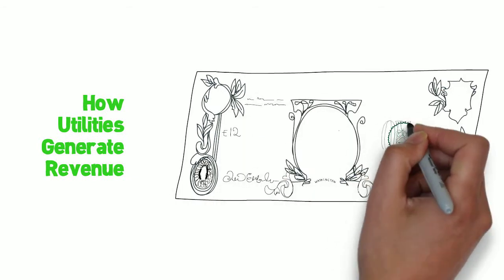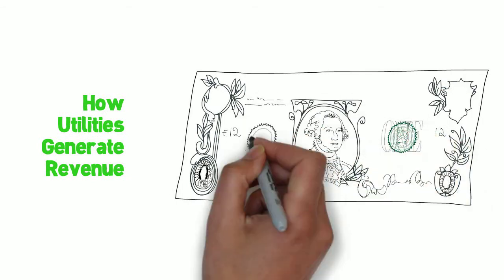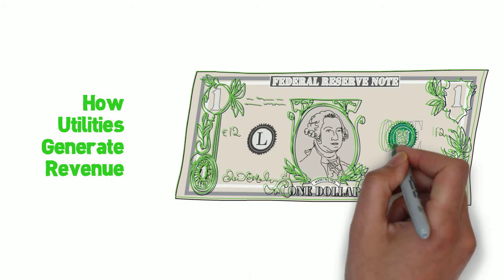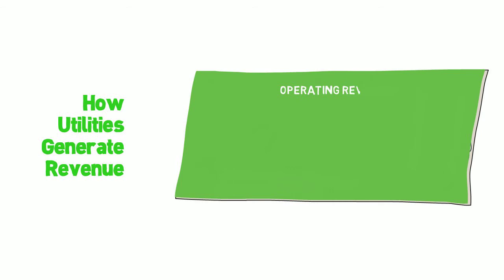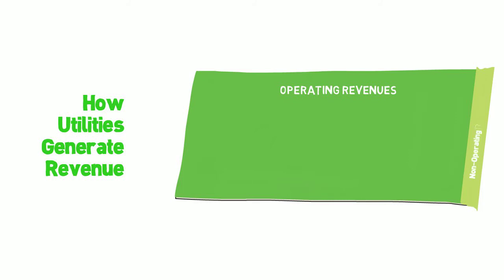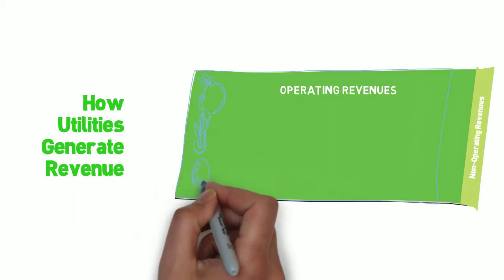Water and wastewater utility revenues come in two primary forms: operating revenues and non-operating revenues. Operating revenues are revenues derived from the various operations of the water and wastewater system, while non-operating revenues are collected through other ways, such as system development charges, renting equipment, renting space, and so on. Although the breakdown of revenues varies from utility to utility, for an overwhelming majority of utilities, operating revenues constitute the vast majority of all revenues.